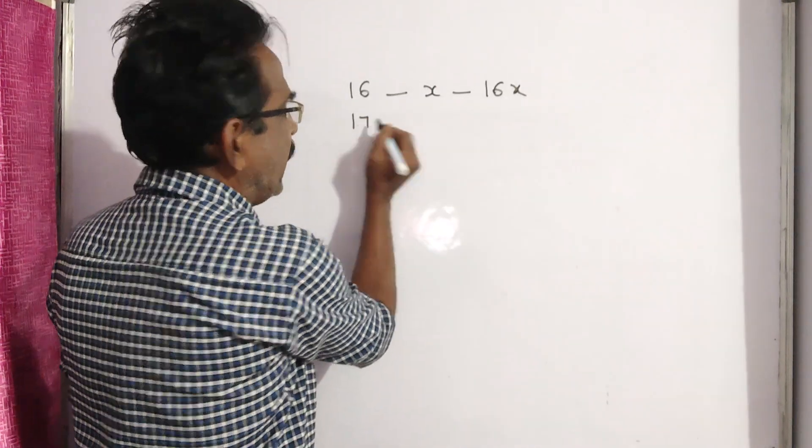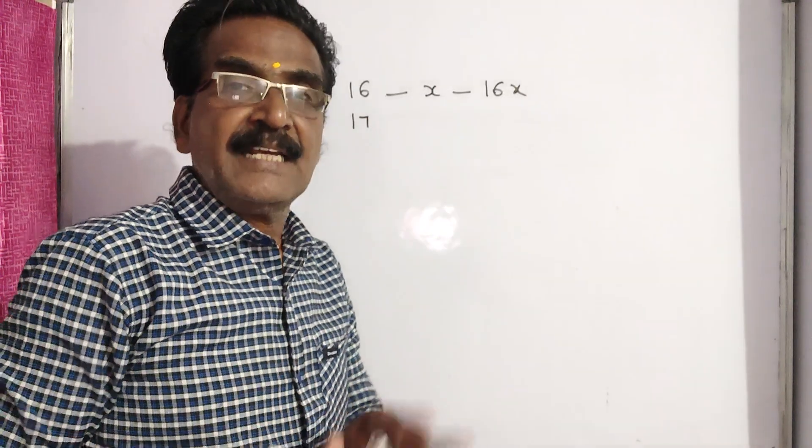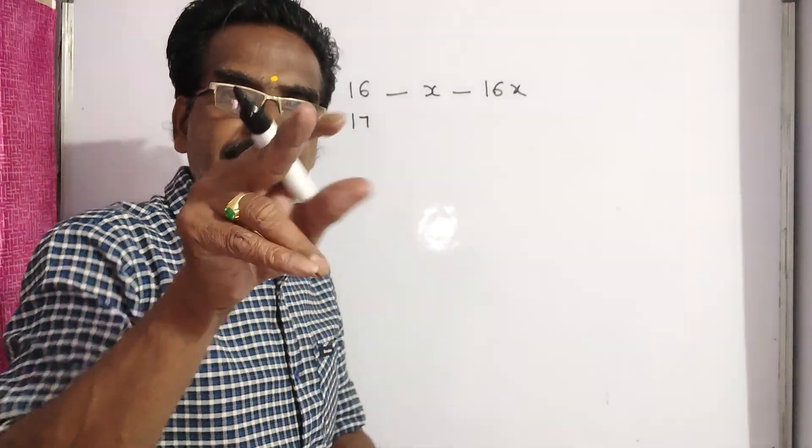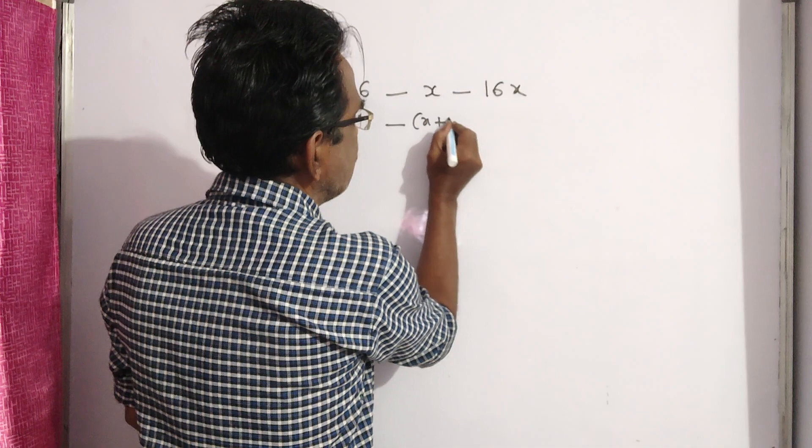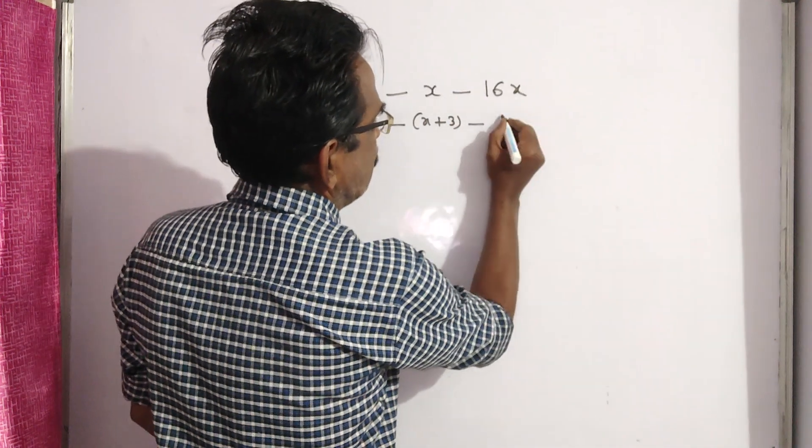Now he played the 17th match and scored 85 runs. With this, his average is increased by 3. Now his average is X plus 3.